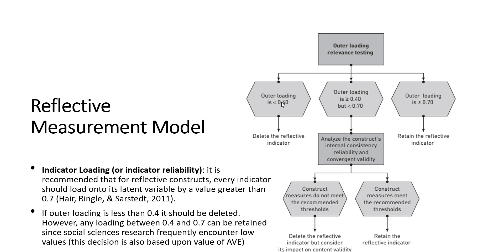If outer loading is less than 0.4, we must delete the reflective indicator. If outer loading is between 0.4 and 0.7, we analyze the construct's internal consistency reliability and convergent validity (AVE). If the construct does not meet the recommended threshold, we delete the reflective indicator so that content validity or AVE value increases. If AVE is between 0.4 and 0.7 and recommended thresholds are met, we can retain the reflective indicators. If outer loadings are greater than 0.7, AVEs will also be greater because AVE is directly related to outer loading.